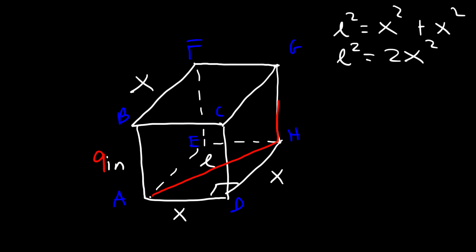Now, we can draw another right triangle between A, H, and G. And so this side is L, this side is X, and let's call the diagonal length D.